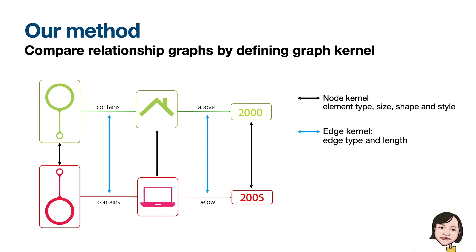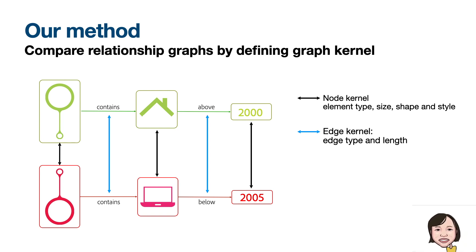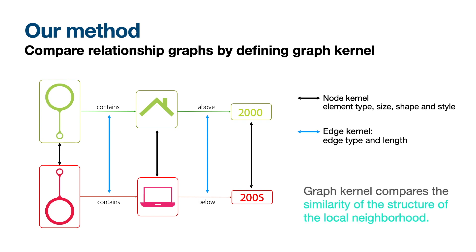Now there are many walks of length 2 that start from the green bubble and the red bubble, so we compare all walks and compute a single similarity score. Essentially, what we are doing is comparing the elements based on the similarity of the local neighborhood. And from this similarity score, we can compute a pairwise correspondence between the source and target elements.